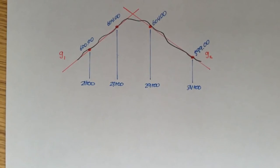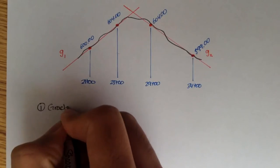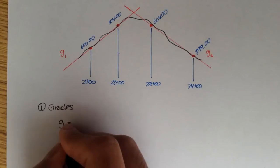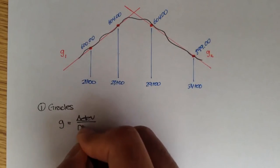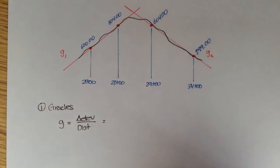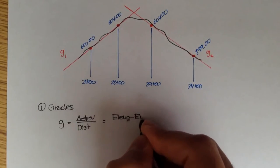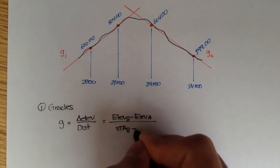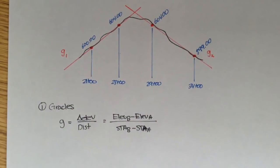If you remember from the grading videos, a grade, or G, was equal to the change in elevation over the distance. That simply means elevation B minus elevation A, over station B minus station A. That's our grade equation.